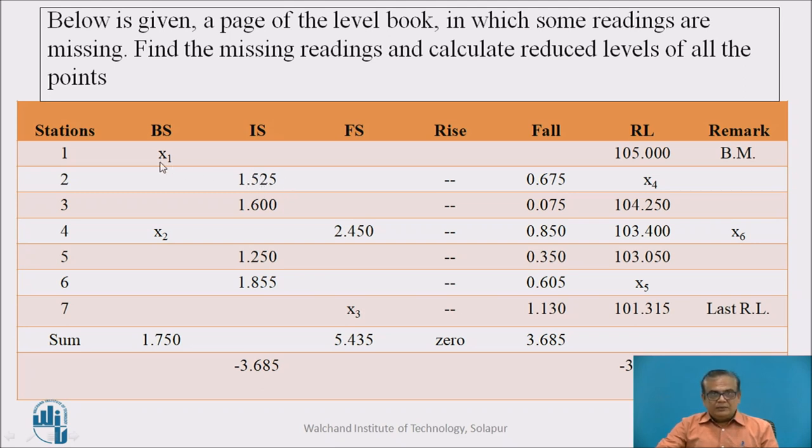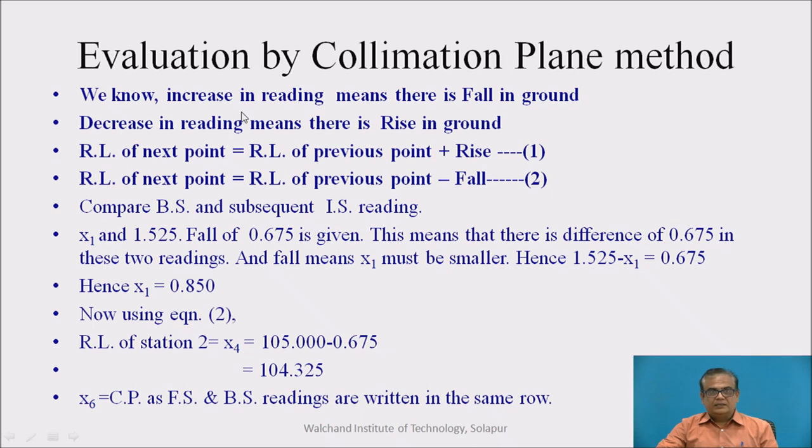That means, difference of these two readings must be 0.675 and X1 must be smaller than the intermediate side reading. This backside must be smaller. So, let us find out what is the X1 from these. Here, increase in reading means there is fall in ground and decrease in reading means there is rise in ground. This we know.